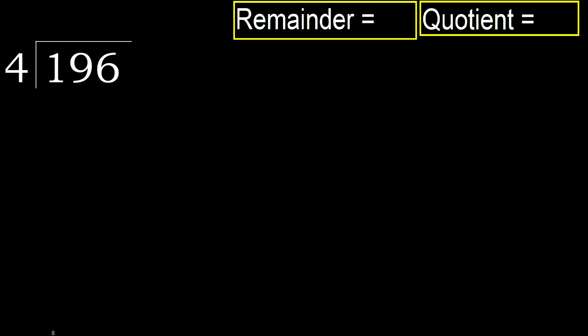196 divided by 4. 1 is less, therefore move to the next digit. 19 — 4 multiplied by which number is nearest to 19 but not greater? 4 multiplied by 5?